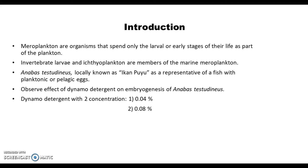Basically, we are using Dynamo detergent with different concentrations to observe the effect on embryogenesis of Anabas testudineus eggs. The concentrations of the Dynamo detergent that we use are 0.04% and 0.08%.